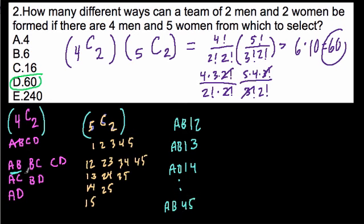In other words, this is a multiplication. For each of these pairs of men, there are 10 pairs of women that could form the committee. So that's 10 times 6, or 60. Alright, hope this helped.